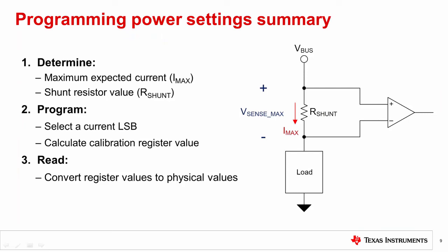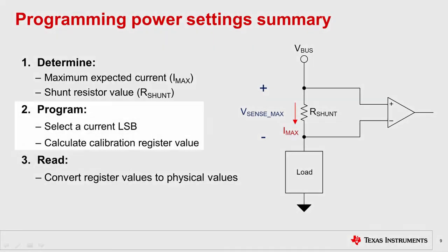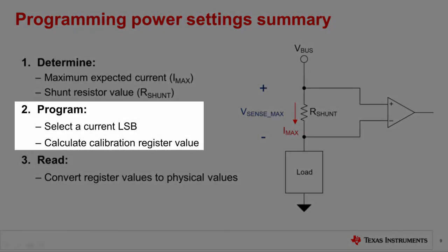Let's take a minute to summarize what we've learned in this video. Taking advantage of TI's digital power monitors is a simple three-step process that can be called determine, program, and read. Specifically, step one is to determine the system requirement: find out what is the maximum expected current and which shunt resistor to use. Step two is to calculate the current LSB and select the smallest whole integer that is larger than the calculated value. This provides the best compromise among resolution, accuracy, and ease of calculation.